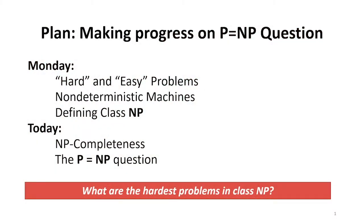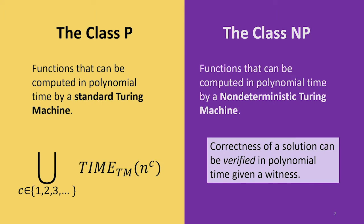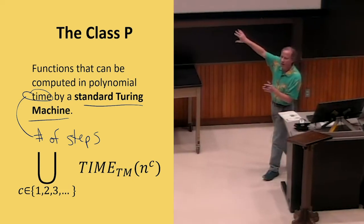To recap what you should understand already, we've defined these two very big complexity classes. The class P is defined in terms of our model of the standard Turing machine, and it is all of the functions that can be computed in time that's polynomial. Time is number of steps. There is some polynomial that grows with the size and input that we can find a Turing machine that computes that function. So it's a very precise definition. It's a very large, robust class.